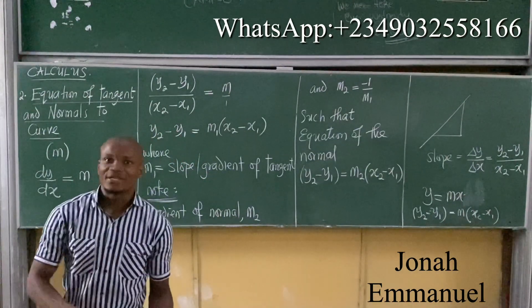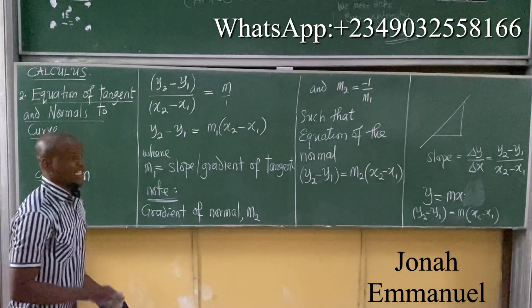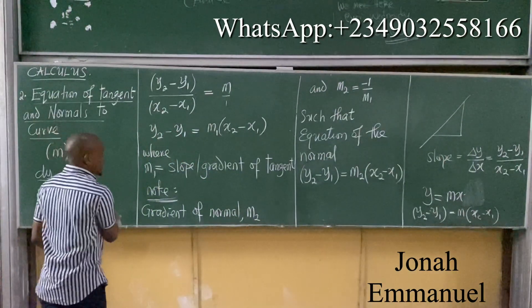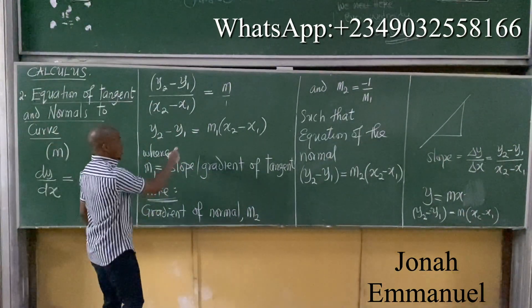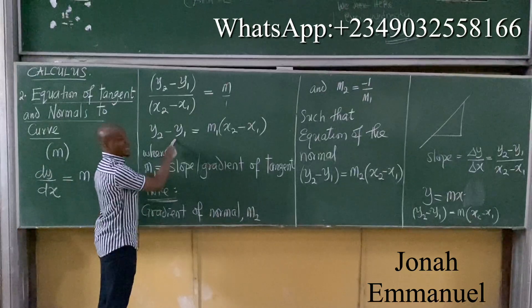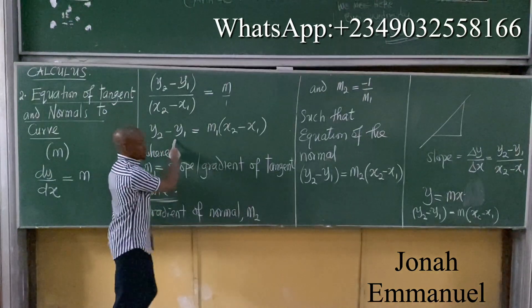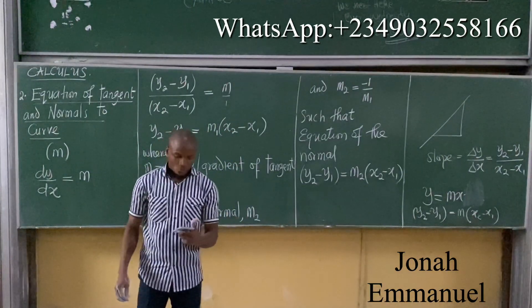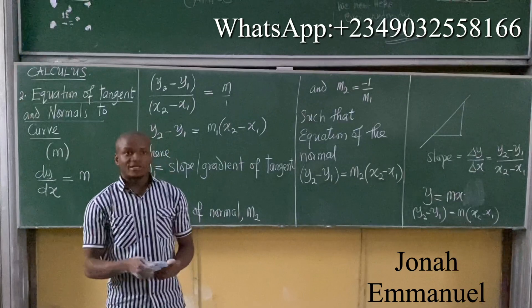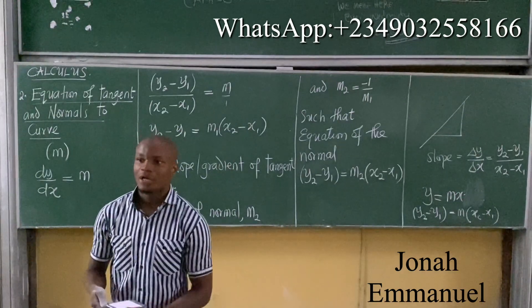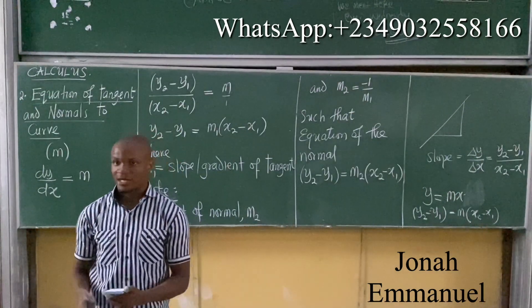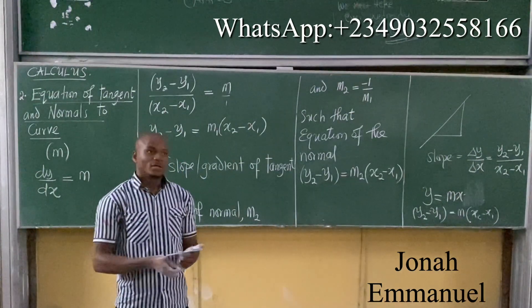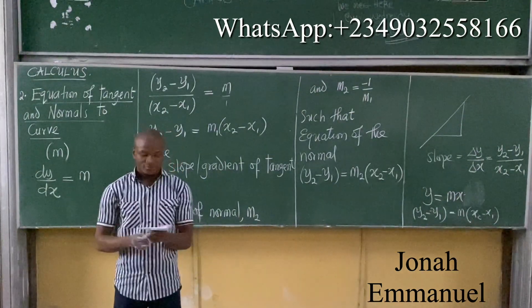One is M1, and M1 is for the tangent — this becomes the equation of the tangent. This becomes the equation of the normal. We'll take just one example; I'll give you one for assignment, then we'll work on this.